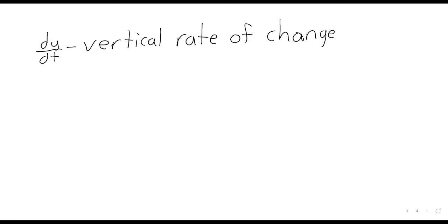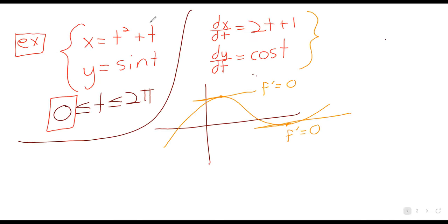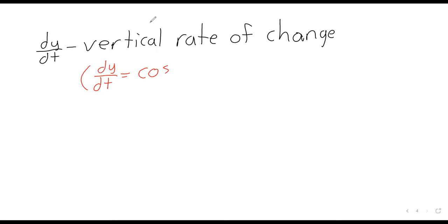Looking at the specific example that I had on the whiteboard, I selected it at random but we can run with it. dy/dt is the cosine of t. And here's where we see how well we remember the unit circle.